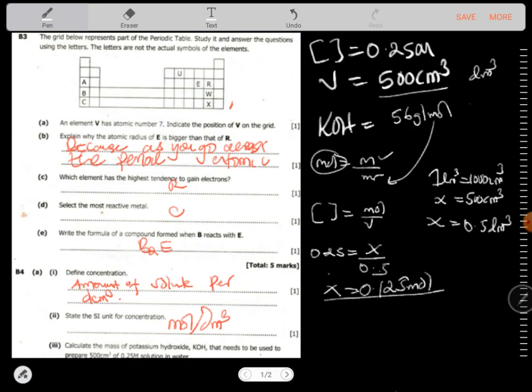Now since we have the number of moles, we can now find the mass. So the mass is equal to number of moles times molar mass. The moles is 0.125 times the molar mass is here, 56. So that is times 56. What you get is the mass, so the mass here is giving me 7.0 grams.